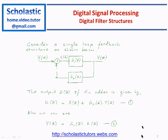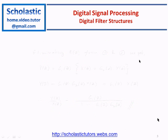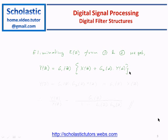So our task is to get rid of e(z) from here because e(z) is an intermediate variable. Substitute e(z) in equation 2 to remove e(z). So eliminating e(z) from equations 1 and 2 we get y(z) equal to g1(z) times x(z) plus g2(z) times y(z).